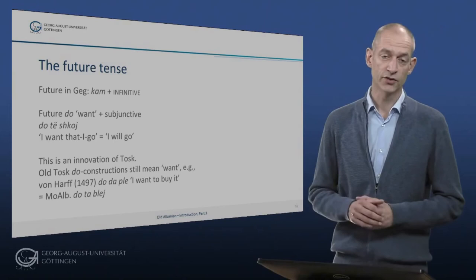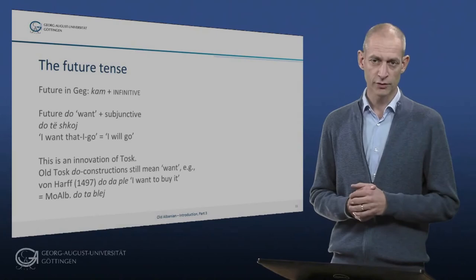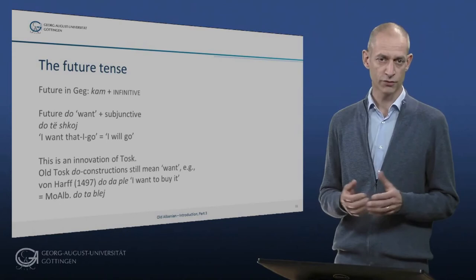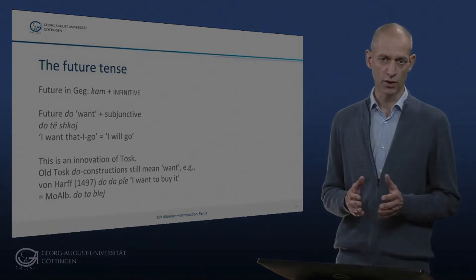The clearest grammatical isogloss between Geg and Tosk is their different formation of the future. In Geg, the future is formed with the auxiliary verb 'kam' (to have) plus the infinitive. In Tosk, on the other hand, the future is made by means of invariant 'do', originally the third singular of 'to want', plus the subjunctive — as in 'do të shkoj' for 'I will go'.